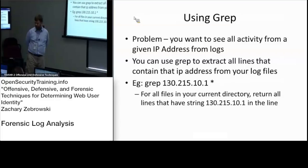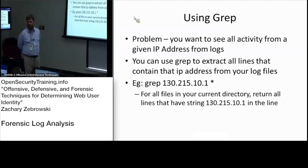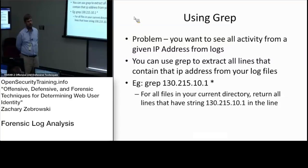One of the things you can do is if you want to see all the IP address information for a particular IP — in this case, 130.215.10.1, which is where I went to college — if you wanted to look for all the traffic from that particular IP address, you grep that IP address for all the files in a given directory using a wildcard star, and it'll search the entire directory for that particular IP address.